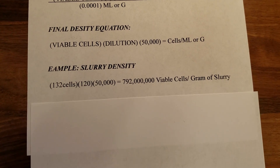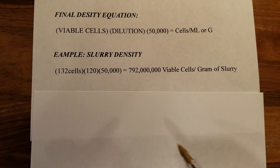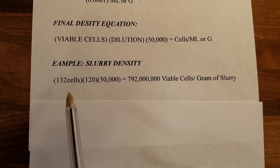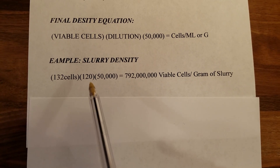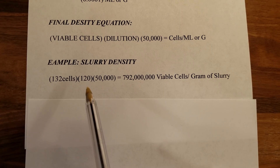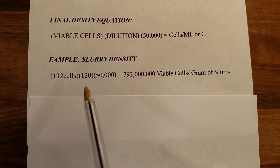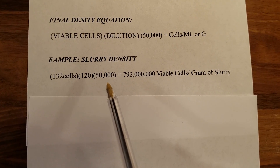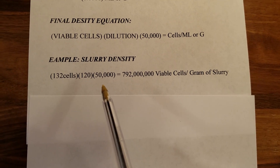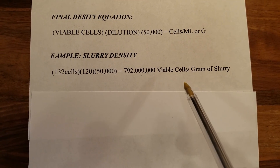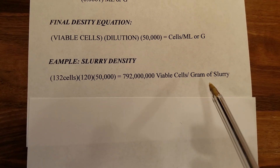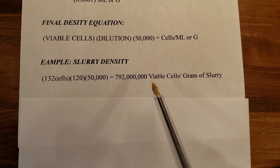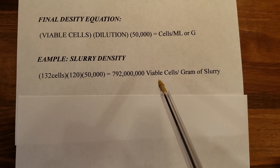Let's look at an example. Say you counted 132 viable cells in your five squares, and your dilution is 120 — if you've seen my dilution video, you know I like to go up to 120. So: 132 cells times 120 dilution times 50,000 gives you your density. I always pitch by weight, so my density is in cells per gram — that comes out to just under three-quarters of a billion cells per gram of slurry.